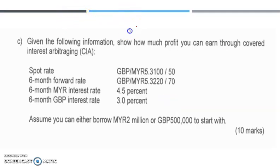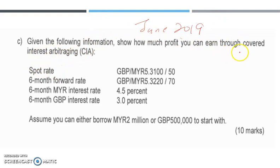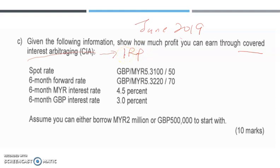I'll give you an example. This is a past question, June 2019, question number one C. Given the following information, show how much profit you may earn through covered interest arbitrage. When you see covered interest arbitrage — CIA — this relates to parity conditions, specifically the interest rate parity, because in step one you need to prove either the CIA exists or not, so you need to use the IRP theory.